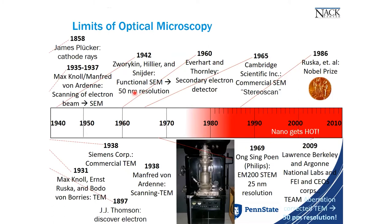A brief history: the first electron microscope came from the contributions of Max Knoll and Ernst Ruska in the early 1930s. They built the first electron microscope, which was a TEM — Transmission Electron Microscope. We'll cover TEM in the fall semester. Ruska received the Nobel Prize in the 1980s.